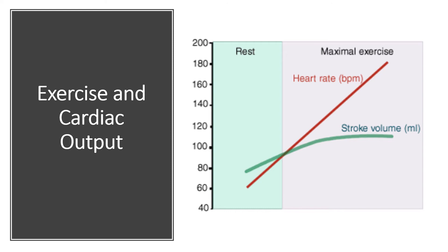However, stroke volume will actually plateau much sooner than heart rate in most individuals. As heart rate increases, there is less time for blood to pool in the heart. That pooling of blood distends the heart chambers, and because the heart is somewhat elastic, greater distention allows for a greater outward contraction. But as heart rate increases, there is less time for blood to return and pool, leading to less distention of the ventricles, a lesser stroke volume contraction, and therefore less blood volume pumped per beat as beats per minute outpace the heart's capacity to refill.